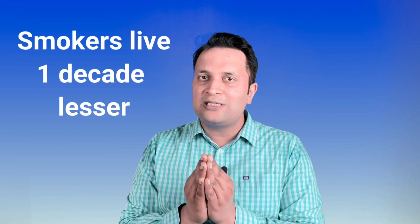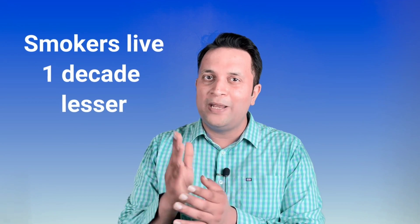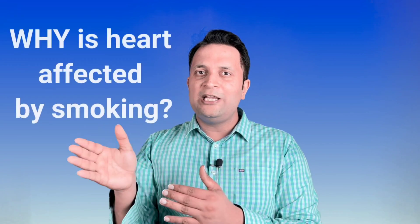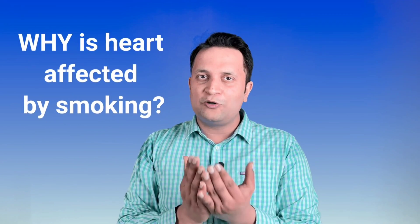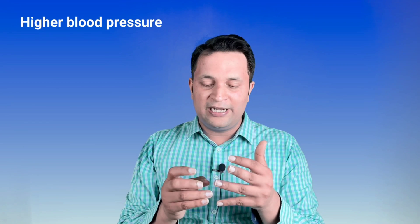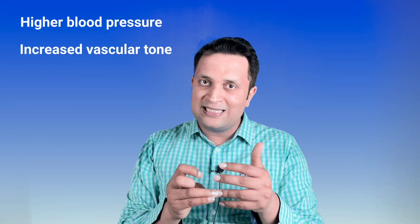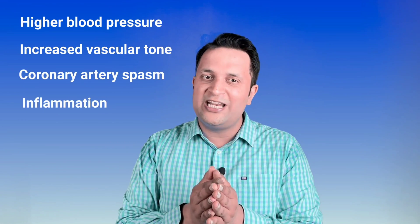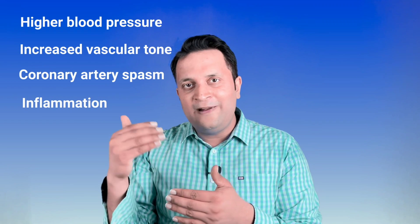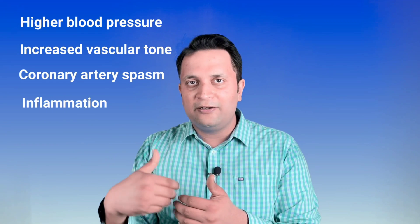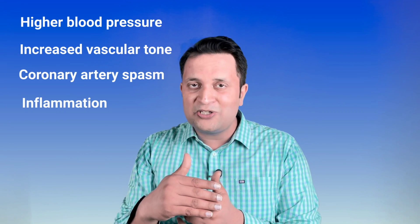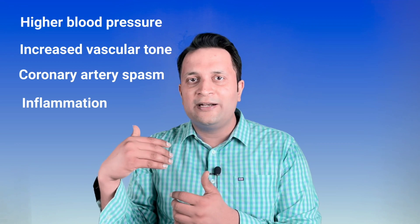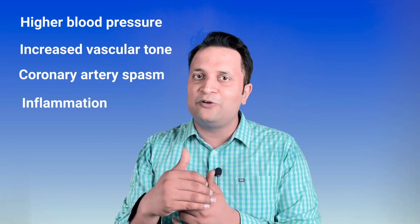It has been said that smoking reduces approximately one decade of life compared to never-smokers. How does smoking lead to all these cardiovascular complications? Smoking increases blood pressure, it increases the tone of blood vessels, it can cause the coronary arteries to go into a contracted state or a spasm, and it can cause an inflammatory state which accelerates the process of atherosclerosis and can result in more blockages of the coronary arteries.